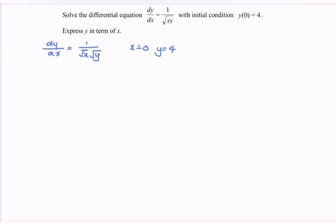By using the separable variable method, we have to separate the x and y. Looking at the right-hand side, we separate y and x, giving us square root of y on the left and 1 over the square root of x on the right.